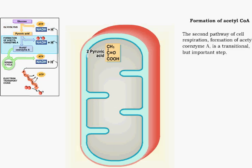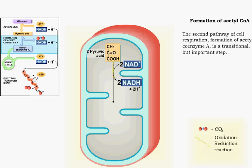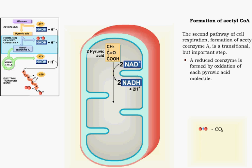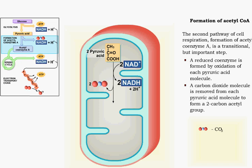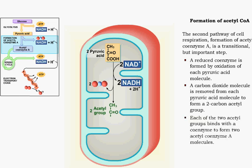The second pathway of cell respiration is the formation of acetyl coenzyme A. Each of the two pyruvic acid molecules resulting from glycolysis is oxidized to produce a reduced coenzyme. In addition, each pyruvic acid molecule loses a carbon dioxide molecule to form an acetyl group. Each acetyl group will then bind with coenzyme A to form acetyl coenzyme A.